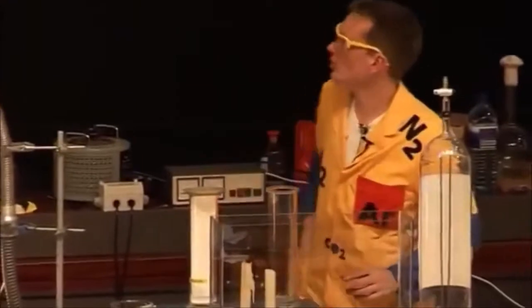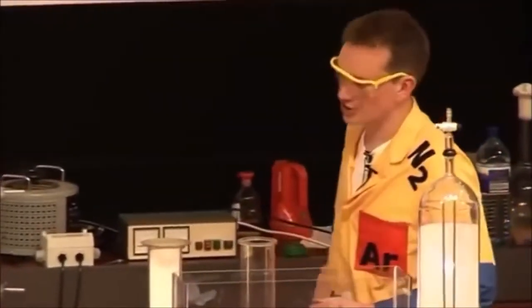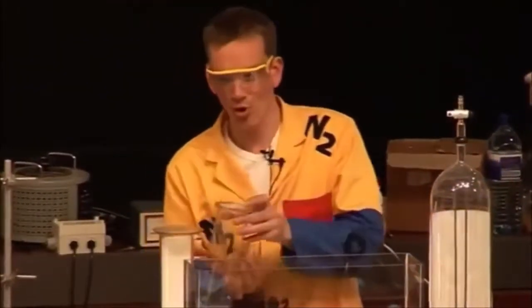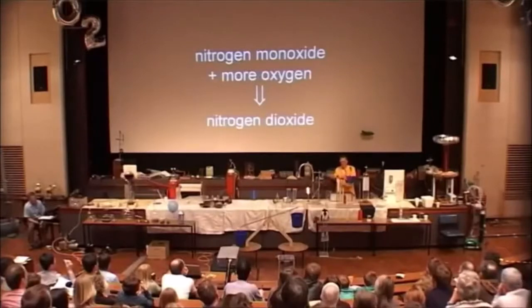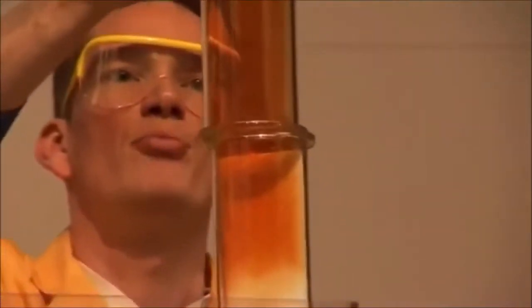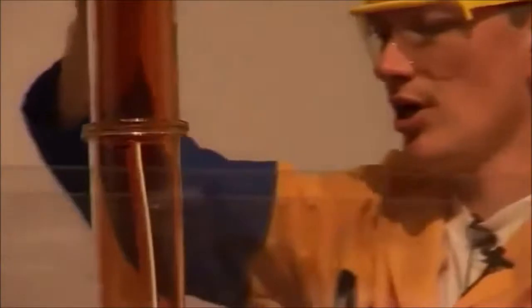But when the nitrogen monoxide reacts with more oxygen, so nitrogen monoxide plus more oxygen, forms another gas called nitrogen dioxide. And this is actually a brown color. As soon as the two gases mix, the brown color is formed due to the nitrogen dioxide.